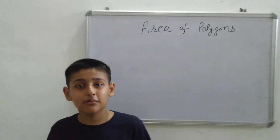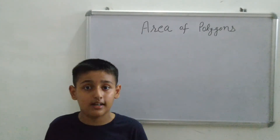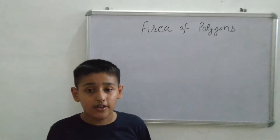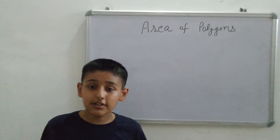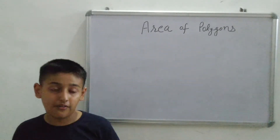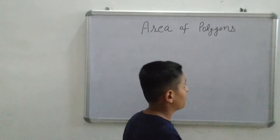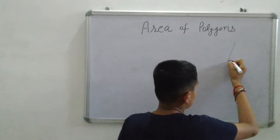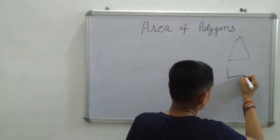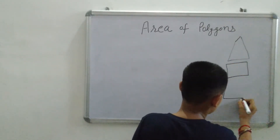Hello friends, welcome to my channel Nanashi. In the last video we learned how to calculate the perimeter of a polygon. In this video we are going to learn the area of a polygon. Today we are taking three types of polygons: first is triangle, second is square, and third is rectangle.